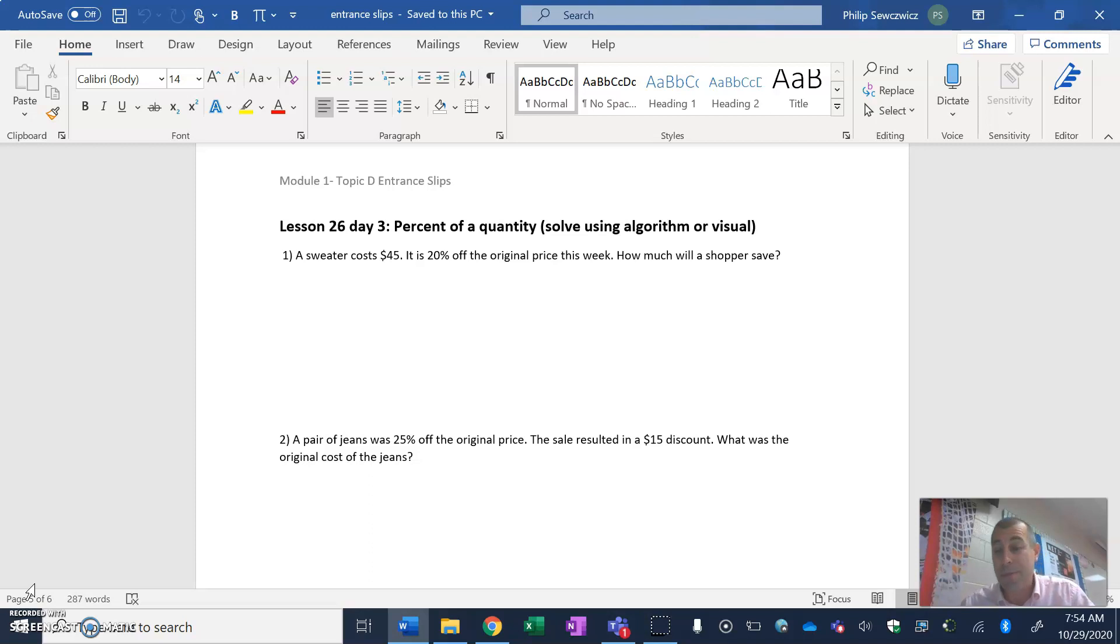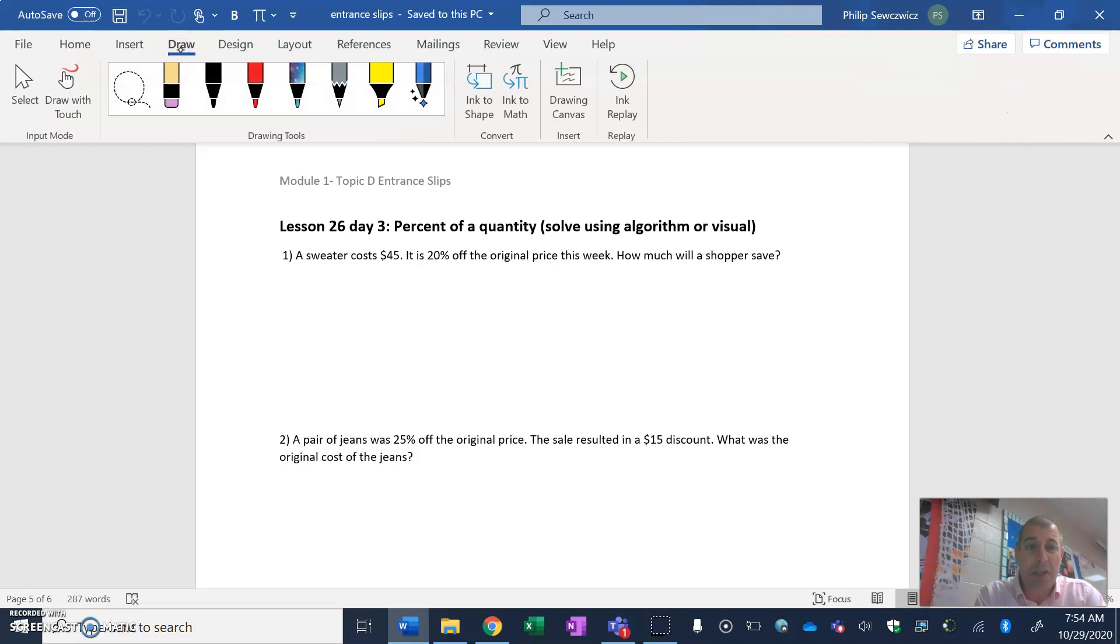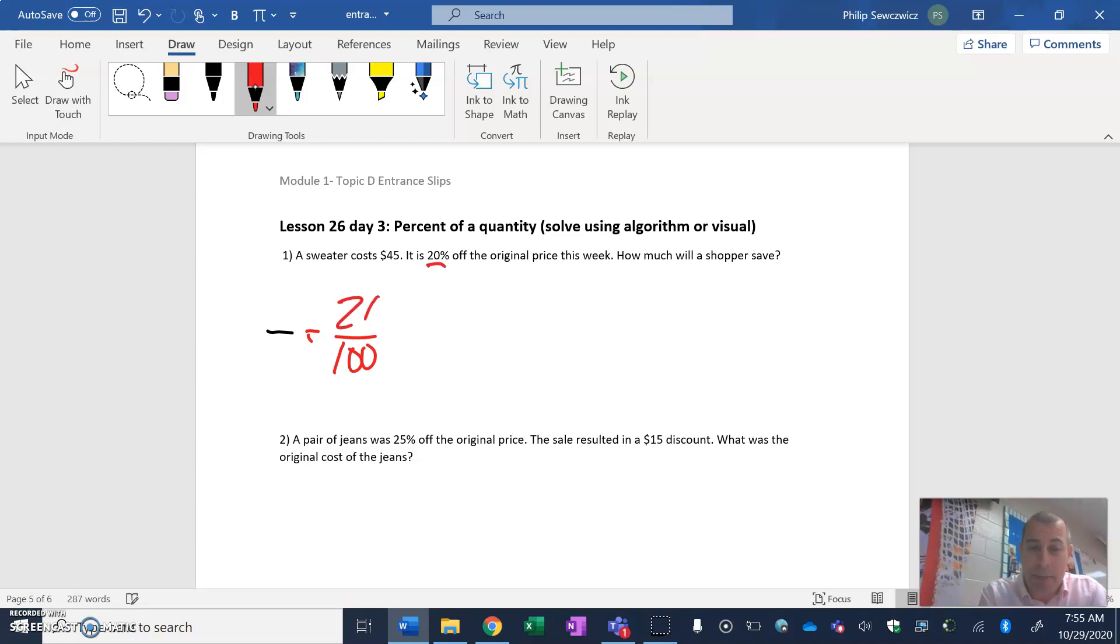Away we go. It says a sweater costs 20% off the original price this week. How much will the shopper save? Things that we know already: percent, so we've always got our 100. We always know that percent is out of 100, so anytime I find that symbol, that makes me like, easy.